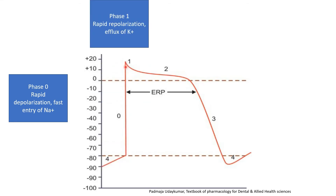Phase one is the rapid repolarization phase. Here the potassium channel opens and a small amount of potassium moves from inside the membrane to the outside, causing a small deviation where the positivity of the membrane is slightly reduced.